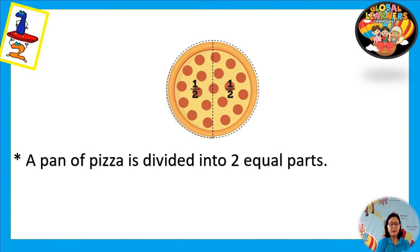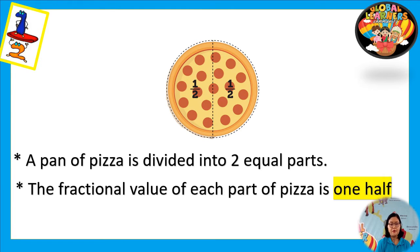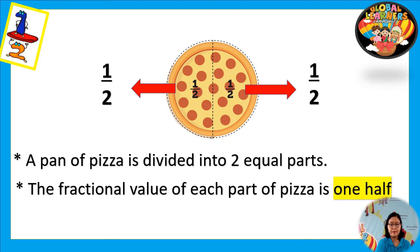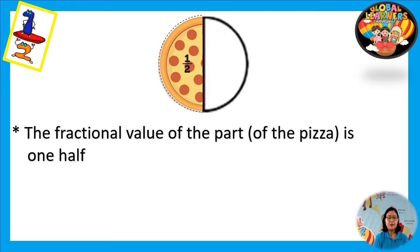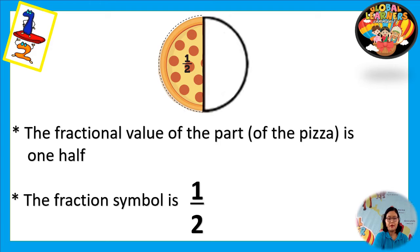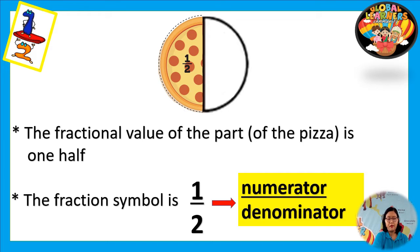A pan of pizza is divided into two equal parts. The fractional value of each part of pizza is one half. The fraction symbol is one half — one is the numerator and two is the denominator.